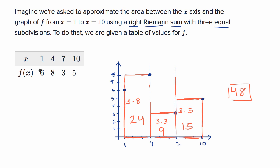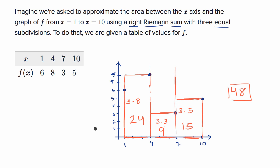Just using that table of values, we've been able to find an approximation. We don't know how good the approximation is — it depends on what the function is doing. There's a world where it could be a very good approximation if the function happens to be smooth and well-behaved, or it might be a very bad approximation if the function oscillates wildly. But we can at least do the approximation using a right Riemann sum just using this table.